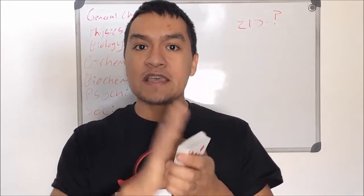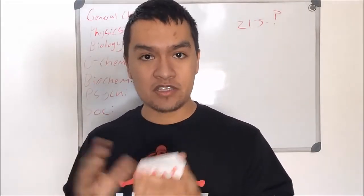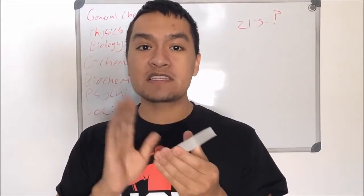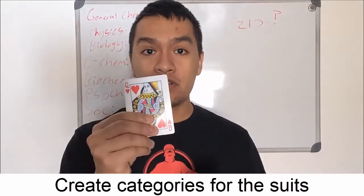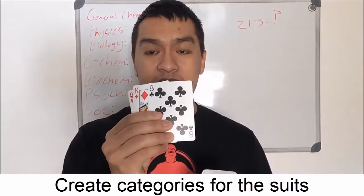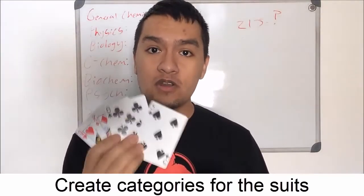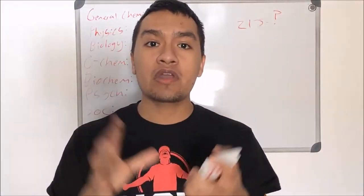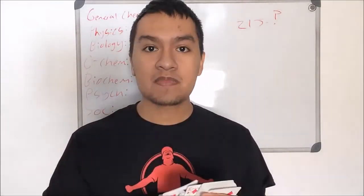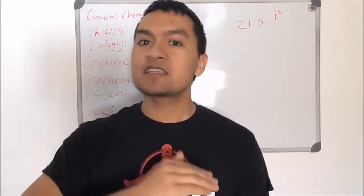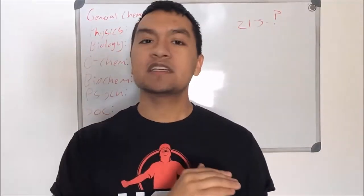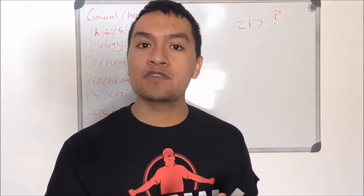After you have your images, you can actually memorize a deck of cards. To make the process a little bit easier, you could create a category for all the different suits — hearts, diamonds, clubs, and spades. For example, hearts could be people you love, and diamonds could be rich people. That makes it easier because as soon as you see a heart, you instantly know it's going to be someone you love.